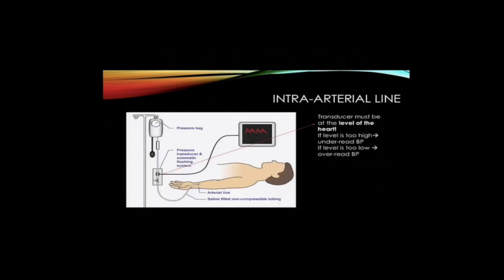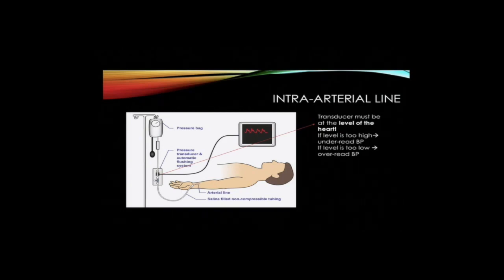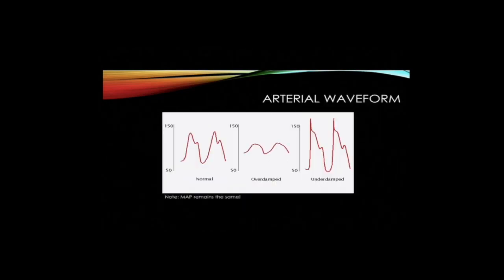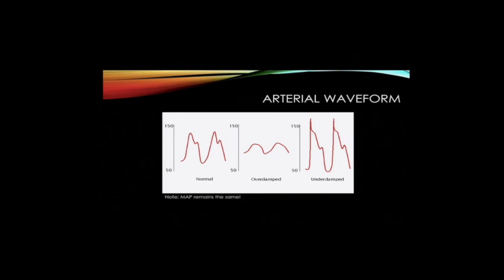The arterial catheter is one of the most common interventions in the ICU and allows invasive blood pressure monitoring. The pressure transducer must be placed at the level of the heart. If the level is placed too high, this will lead to an under-reading of the blood pressure. If the level is too low, this will cause an over-reading. Transducer kits are designed to provide optimal damping of the pressure waveform. An under-damped trace will display an inaccurately high systolic blood pressure and an inaccurately low diastolic blood pressure. The converse is true in an over-damped trace. In both cases, the mean arterial pressure should be accurate.